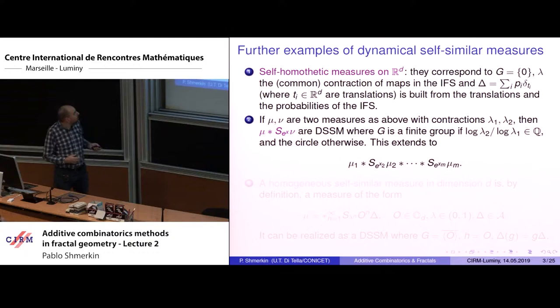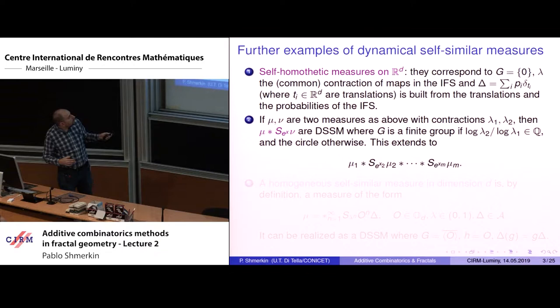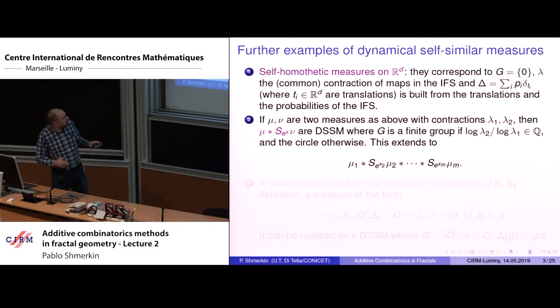We can do this for many measures — we don't have to stop at two. In this case, if all the logarithms are rationally independent (together with 1 under some natural condition), the group will be a torus of dimension equal to the number of measures minus 1.